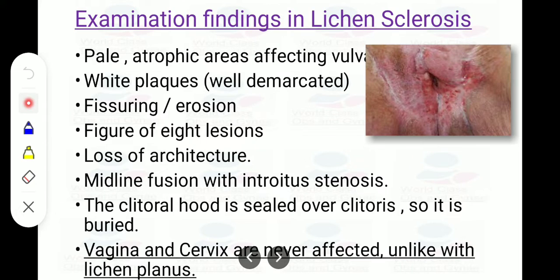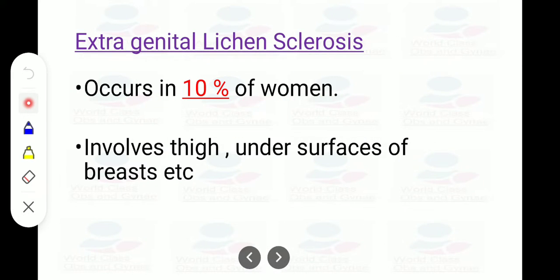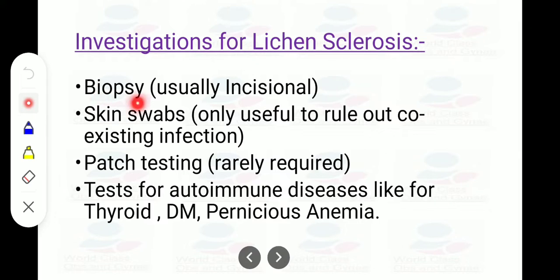An important distinguishing feature of lichen sclerosis is that the vagina and cervix are NOT involved, unlike lichen planus. If vaginal or cervical involvement is mentioned in a question, that points to lichen planus. In 10% of cases, lichen sclerosis involves extra-genital organs like the undersurfaces of the breasts. Investigations include incisional biopsy as diagnostic, and skin swabs if coexisting infection is suspected.